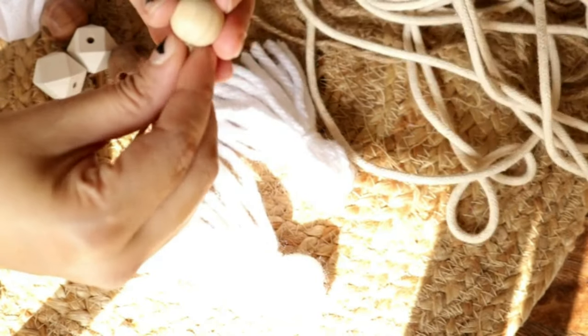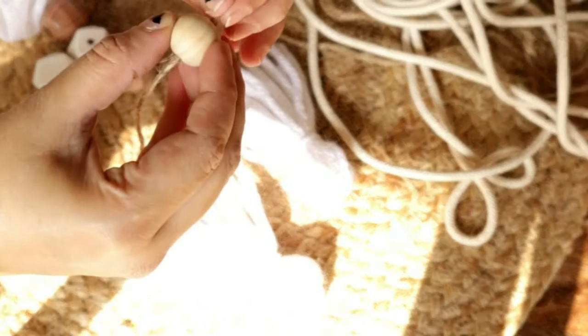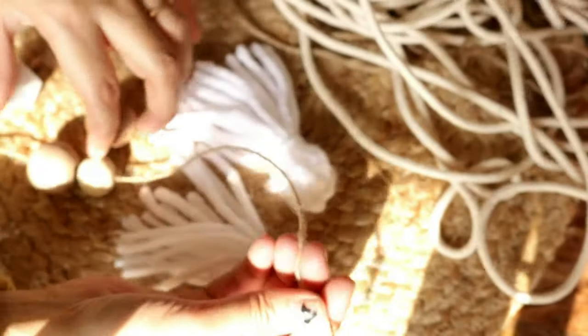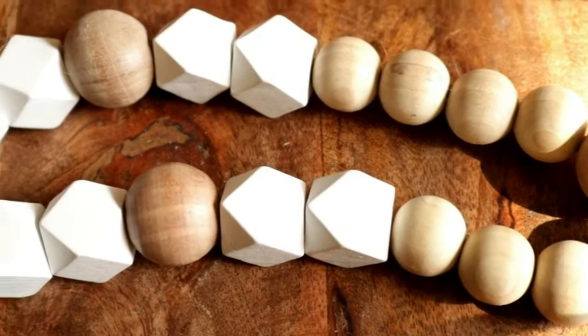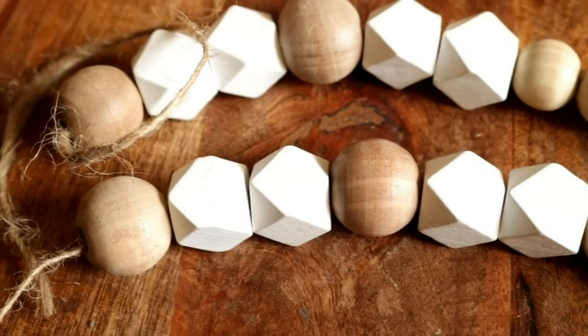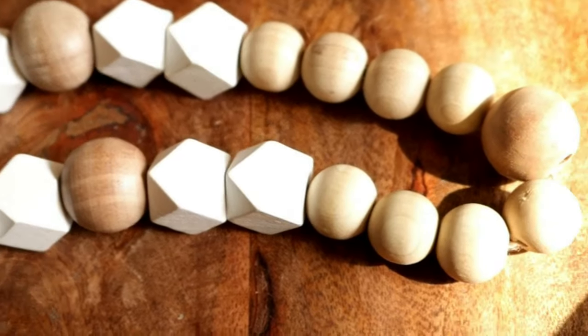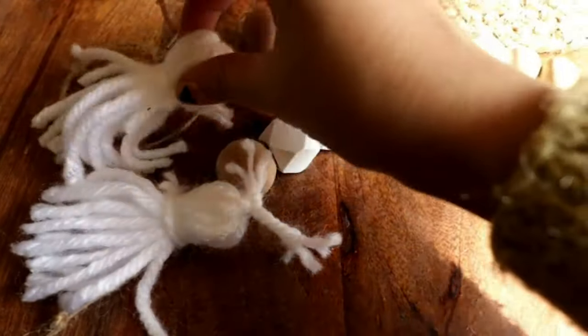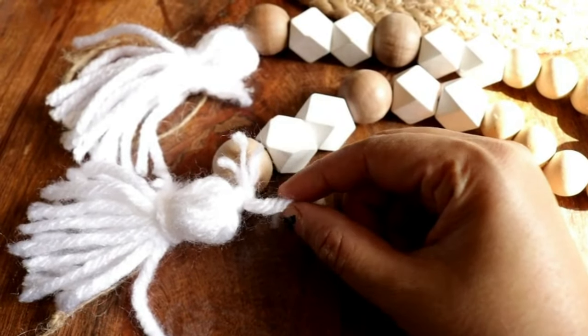Now I am starting to put the beads in. I have started with a bigger bead because I want my garland to end with a bigger bead. While making the garland, make sure that you are following some kind of symmetry so that it looks nicer. Once we are done with the beads, we have to simply tie the tassels at the end. And just like that, our beads garland is ready.